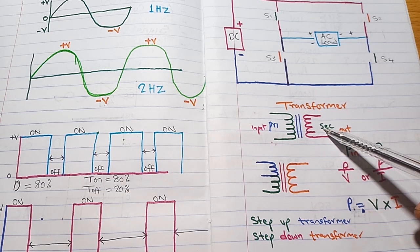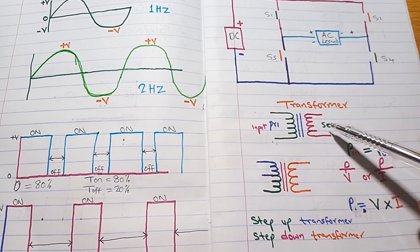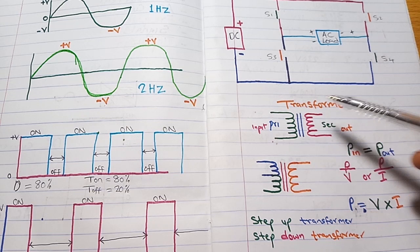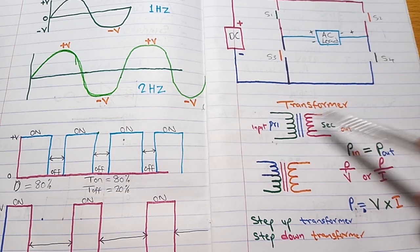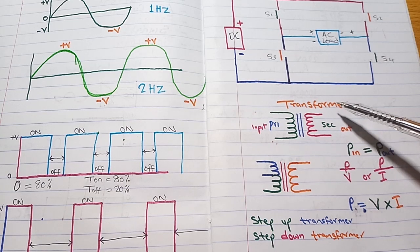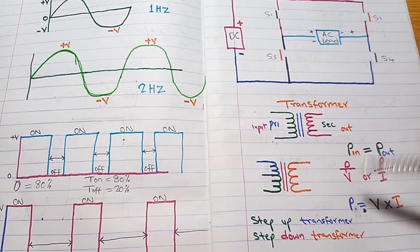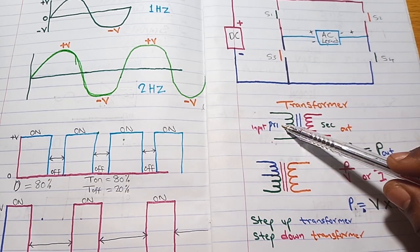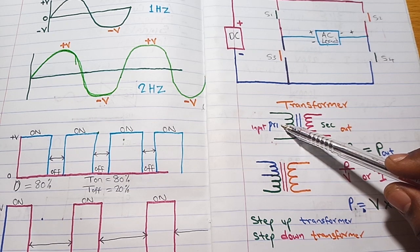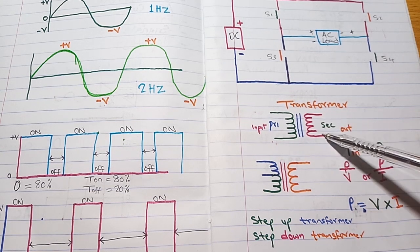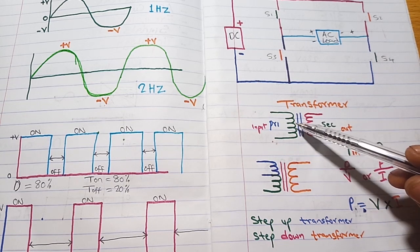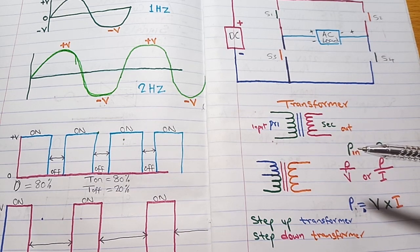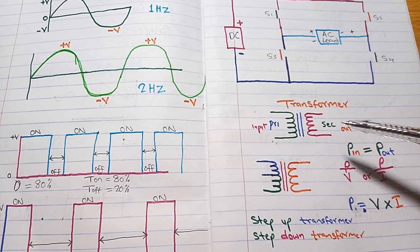In a situation where we are increasing the voltage by applying a lower voltage into the primary to get a higher voltage at the secondary, it is known as a step-up transformer. The primary simply signifies anything that is your input. Whether it is a step-down or step-up transformer, the place you use as your input will be your primary.